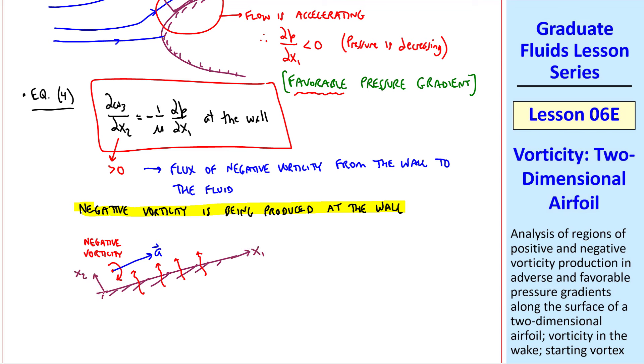By the way, in the X1, X2 coordinate system, or the boundary layer coordinate system along the wall, ω3 is positive, or counterclockwise, coming out of the page in the Z direction, or the X3 direction. That's why this vorticity is negative.